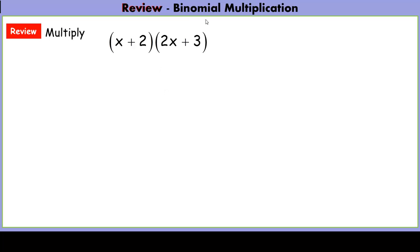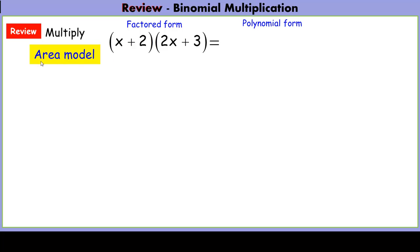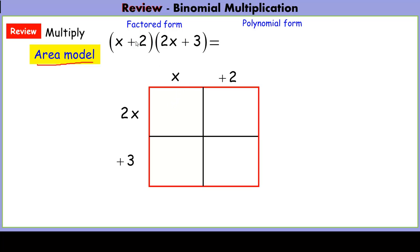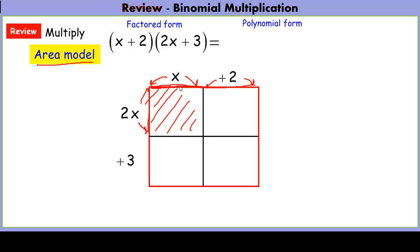Let's review binomial multiplication quickly. We're going from a factored form into a polynomial form using an area model. We take the two binomials, x plus 2 and 2x plus 3. The binomial x plus 2 tells us the length of one side of a rectangle — x is the length of one segment and 2 is the length of another. Similarly, 2x tells us the length of the other side. We multiply side times side to find the area of each sub-rectangle.